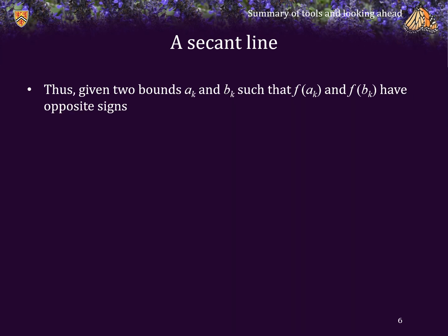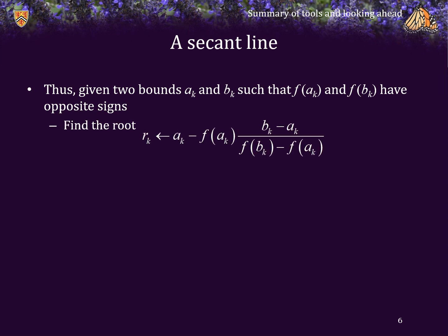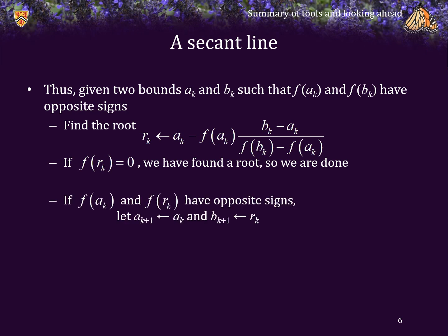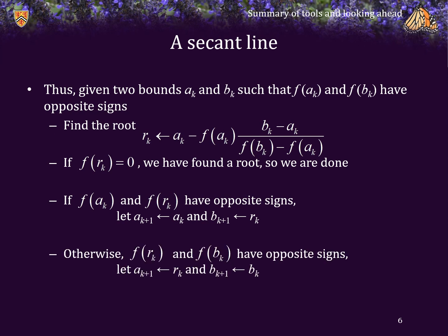Given two bounds, a sub k and b sub k, such that f evaluated at these two endpoints have opposite signs, we will find the root of the interpolating linear polynomial that passes through these two points. If f evaluated at this point is actually equal to zero, we have found a root — we'll return r sub k. However, if f at a sub k and f at r sub k have opposite signs, we will leave a sub k unchanged and update the right endpoint with r sub k. Otherwise, we update a sub k plus one to be the root that we just found.